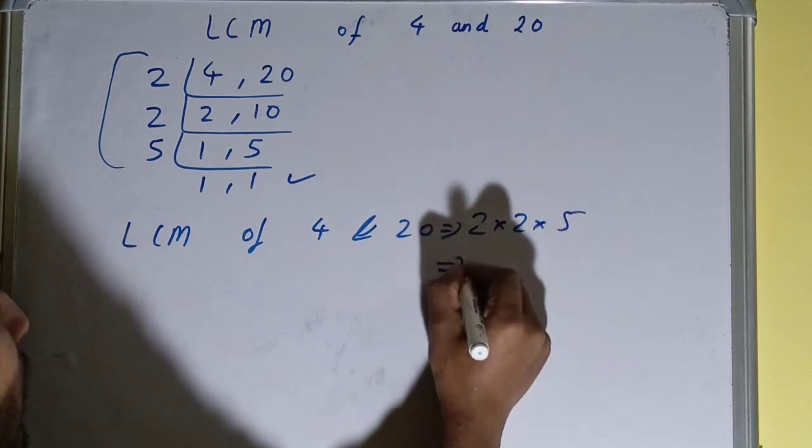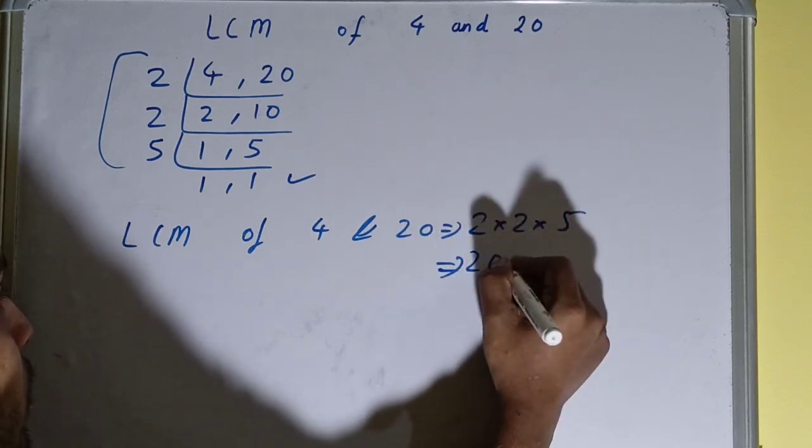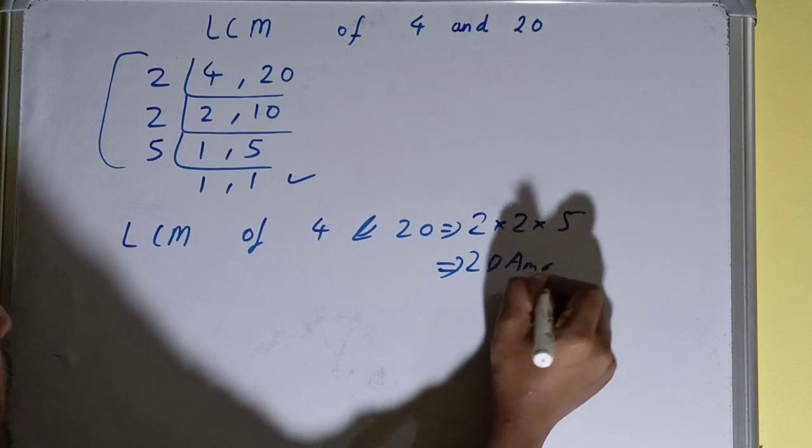That is 2 times 2 times 5 equals 20. Your answer will be 20, or your LCM will be 20.